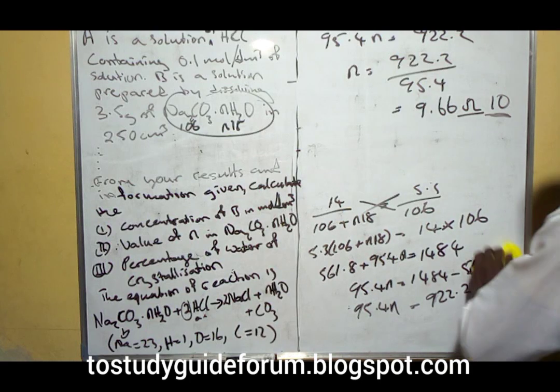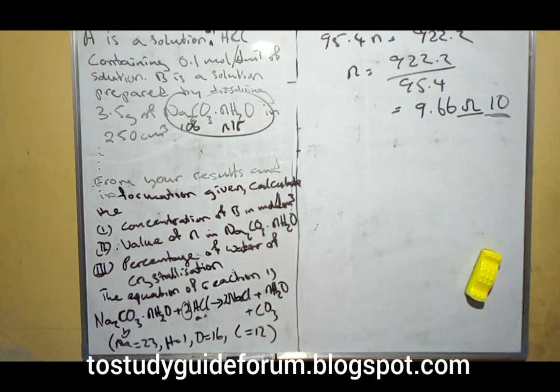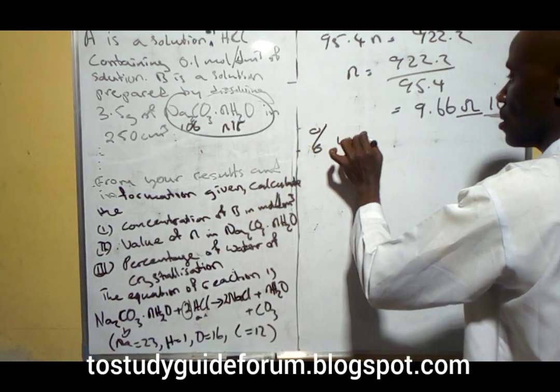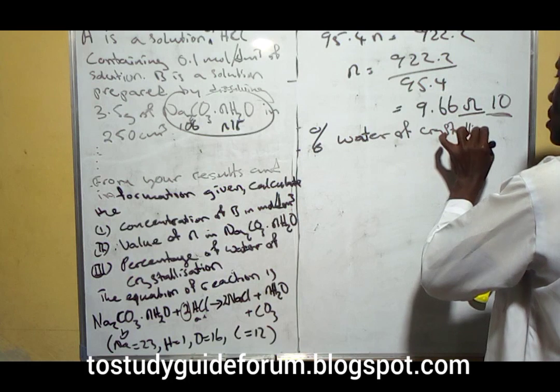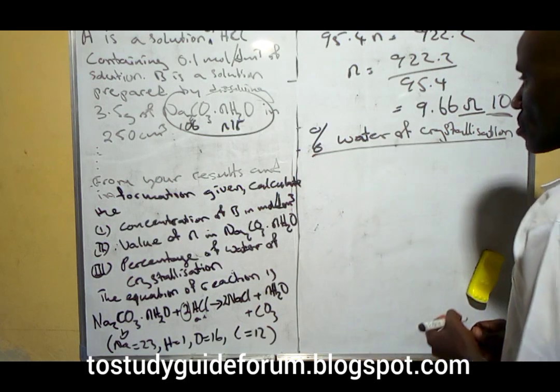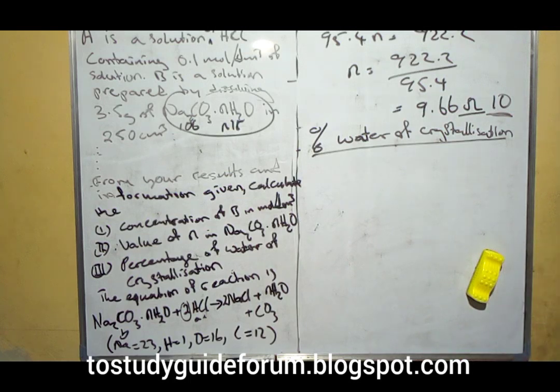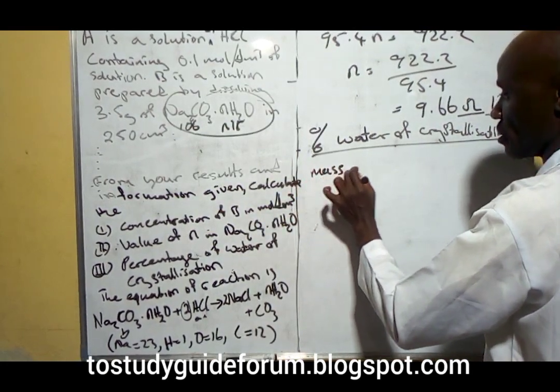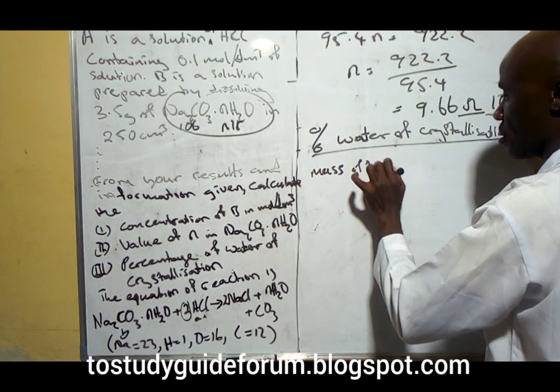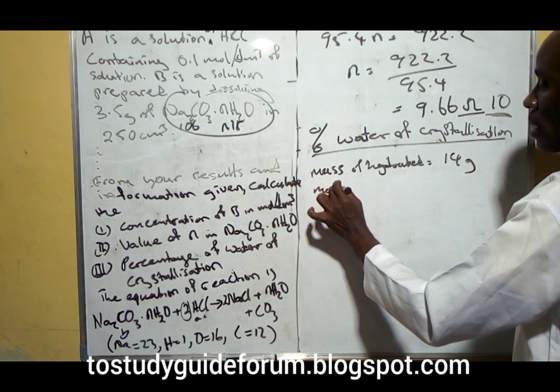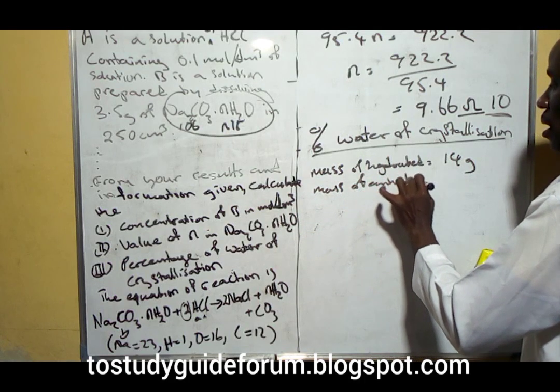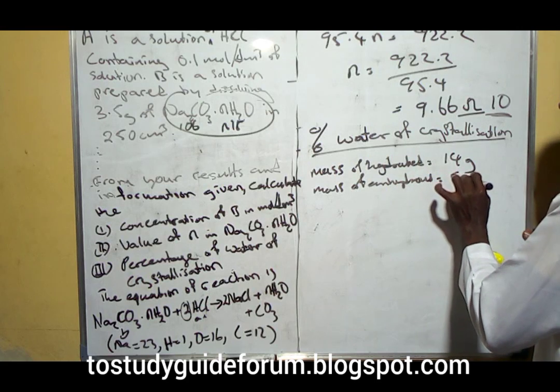The last thing we are going to do is calculate the percentage water of crystallization. Mass of hydrated salt is 14 grams, mass of anhydrous salt is 5.3 grams.